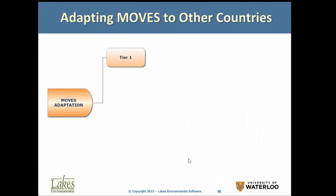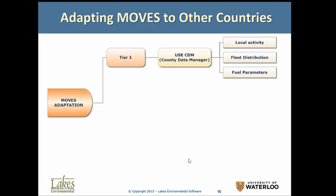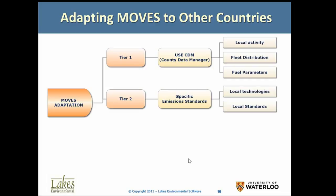To adapt MOVES to other countries, the tier-one approach is to use the County Data Manager tool within MOVES and then modify to adjust. This is the quickest way to adapt MOVES to work in, for example, Kuwait. You enter local activity, local VMTs, and fleet distribution. Fuels in a different country may be different. You can include other databases with MOVES-specific emission standards — for instance, California frequently changes its emission standards. I should note that California has its own emissions model for mobile sources, called EMFAC. You can also account for local technologies, new types of combustion, or new catalysts.